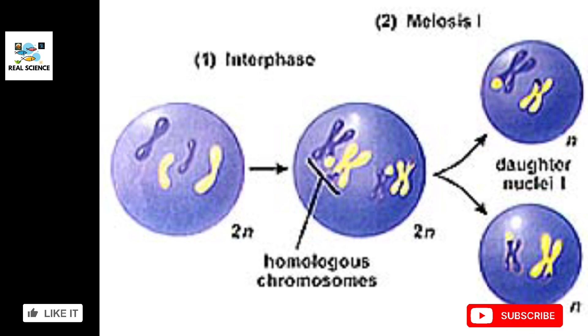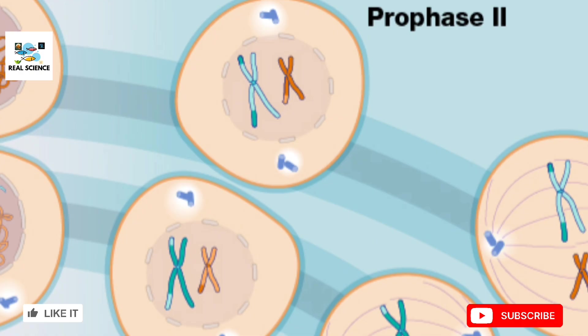Prophase two of meiosis two begins. The same events occur as in the prophase of a general mitotic division. Here, the chromosomes which were like fibers get condensed into an X shape, as you can see. The nuclear membrane starts to disappear, just like in mitotic prophase, followed by the appearance of polar bodies which begin to form spindle fibers.